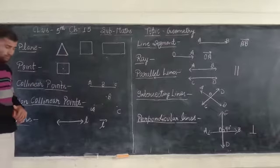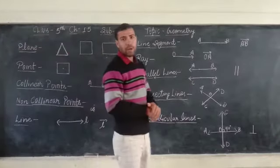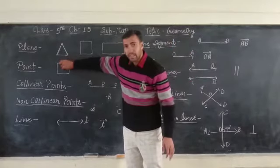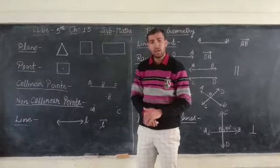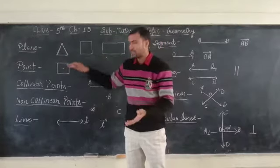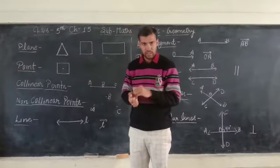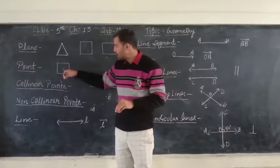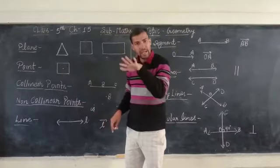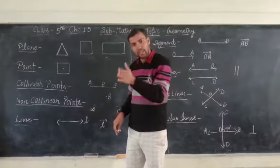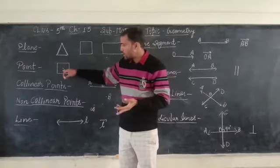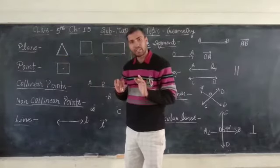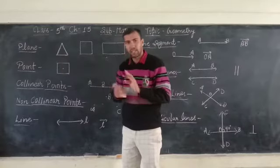What is a point? A point has a dot-like structure. These are dot-like figures. On the flat surface, a point is a dot-like structure. It has no length, no breadth, or height. A point has no length, breadth, or height — it is only a mark of any place.